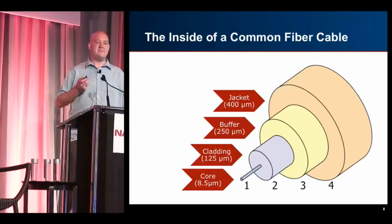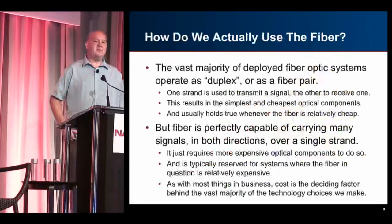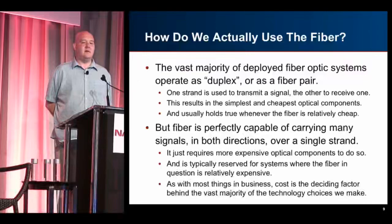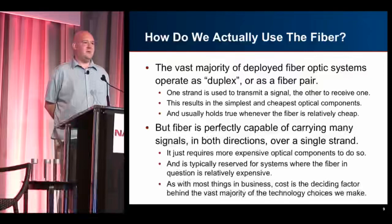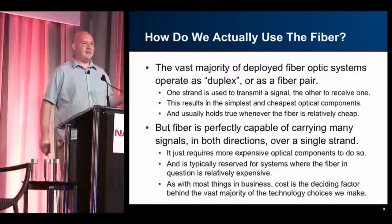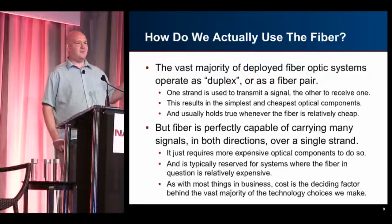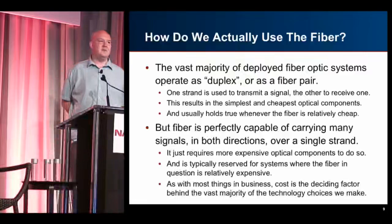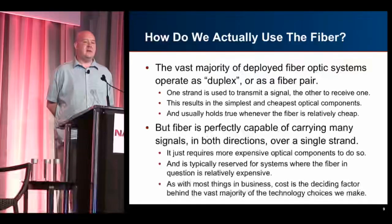How do we actually use the fiber? The vast majority of deployed systems use duplex — a fiber pair. One strand is used for transmit and the other for receive, and you flip that on the other side so receive goes to receive and transmit goes to transmit. This results in the simplest and cheapest optics.